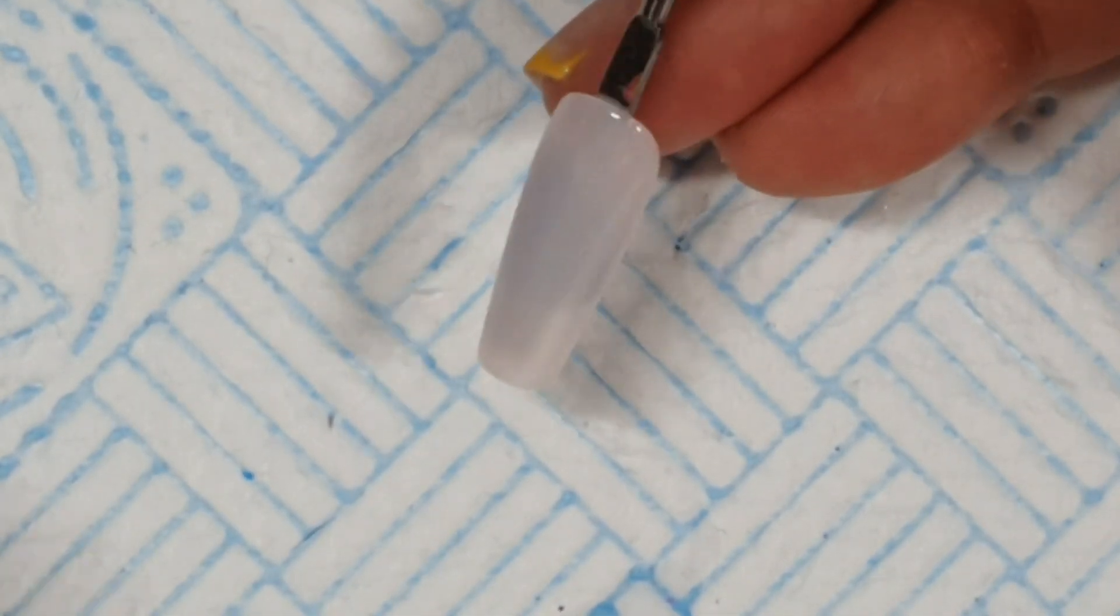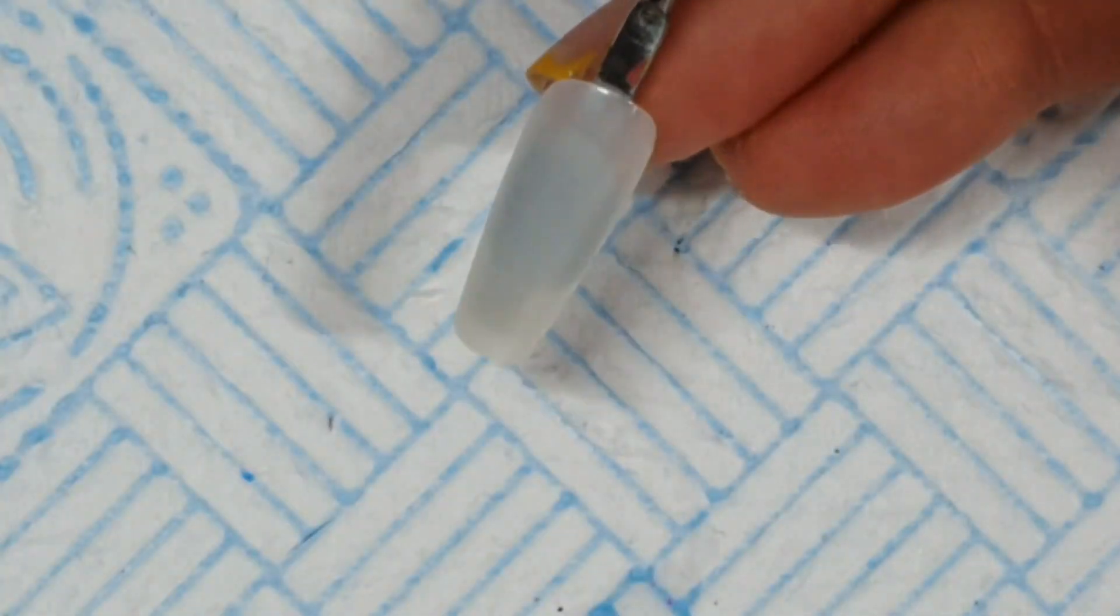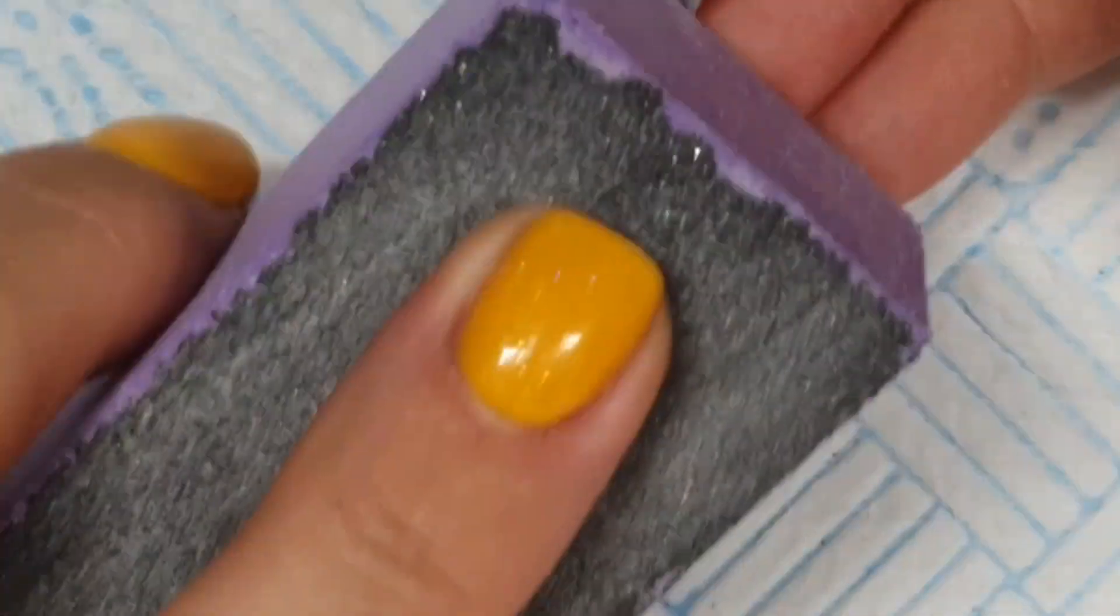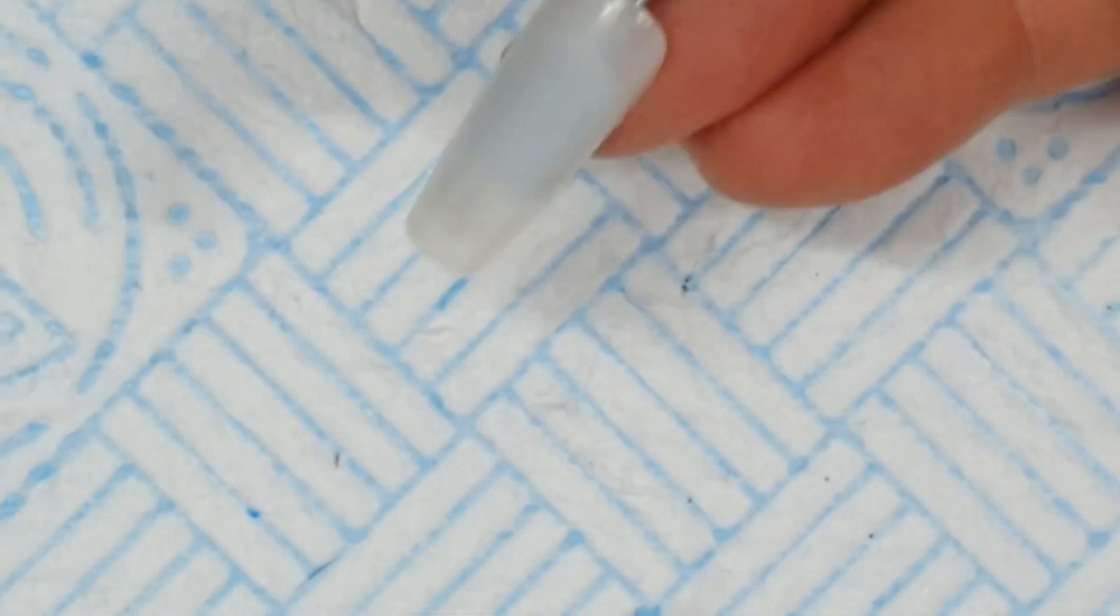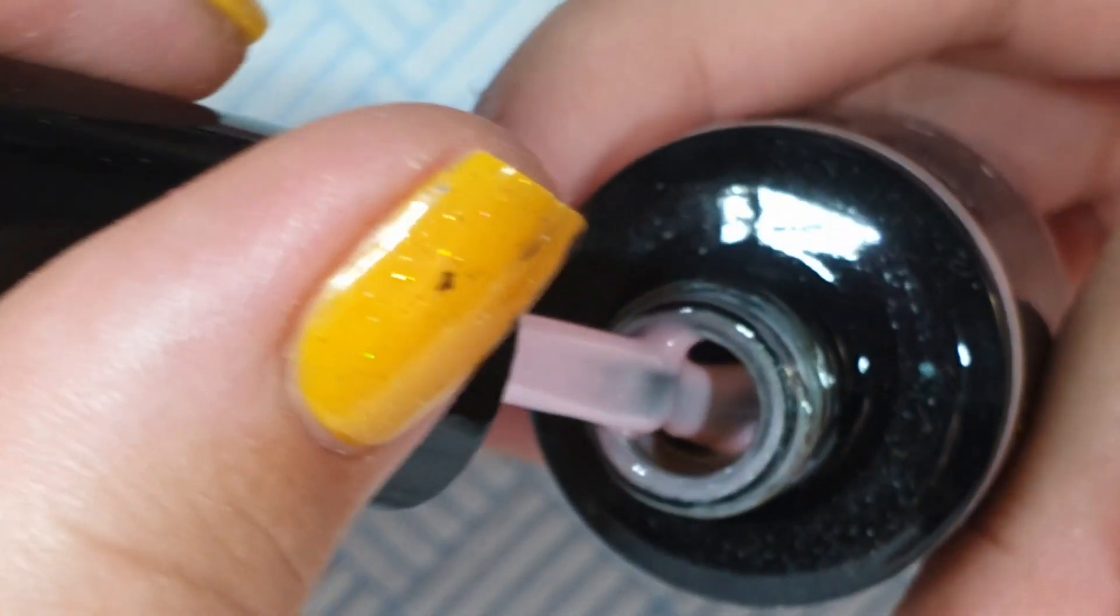So I took that off, gave it a buff and a dust. Obviously the base coat's still there so that's fine. Then I'm going to go in with ballerina. Excuse my voice, I'm having another allergy day today. I'm all wheezy and snotty and disgusting, and my eyeball feels like it's going to fall out.